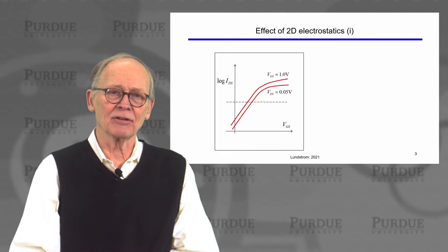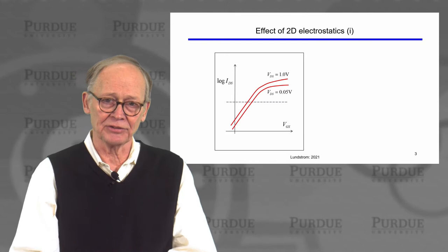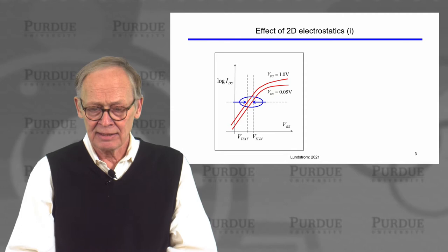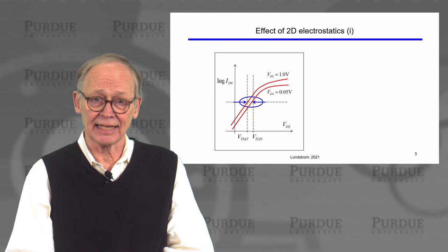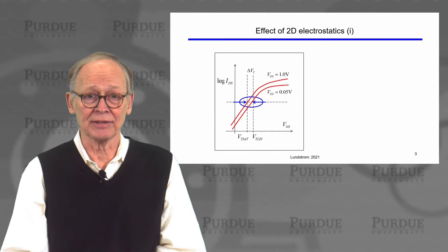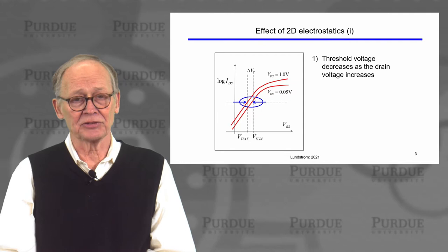If we pick an arbitrary current and say above that current the transistor is on and below that the transistor is off, then we can define a threshold voltage. When we have a low voltage on the drain, it will be called VT_LIN. When we put a high voltage on the drain, there's a lower threshold voltage — VTSAT. This is a consequence of DIBL. So the threshold voltage decreases as the drain voltage increases — an undesirable characteristic.